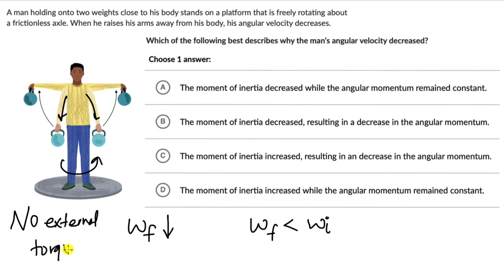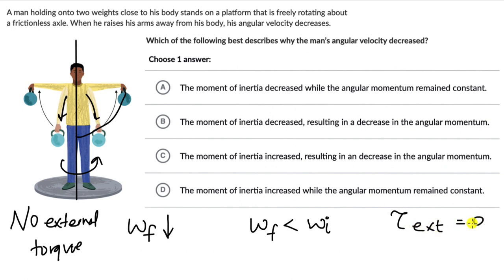Even when the person moves his hands, they are moving perpendicular to the axis of rotation. The person and the weights are internal to the system, so there is no external torque. When the external torque is zero, one quantity is conserved: angular momentum. Just like when external force is zero there is no change in linear momentum, when there is no external torque the angular momentum is conserved.